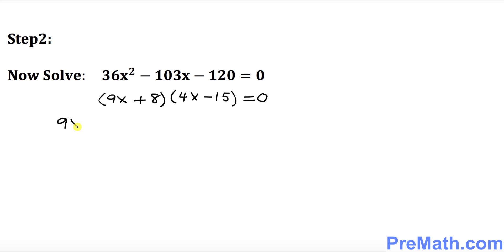Now you know that when we have two factors equal to 0, you can split them up. I'm going to put down 9x plus 8 equal to 0, and the second one is going to be what? 4x minus 15 equal to 0. Here I want you to subtract 8. We want to solve for x.